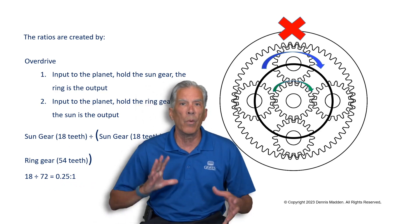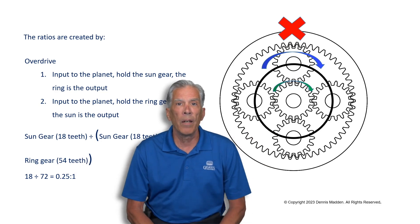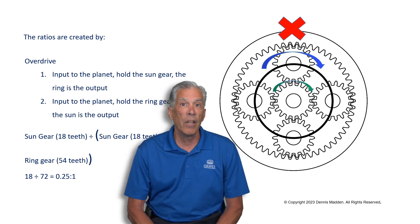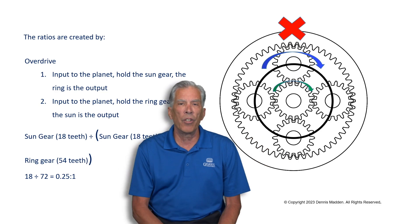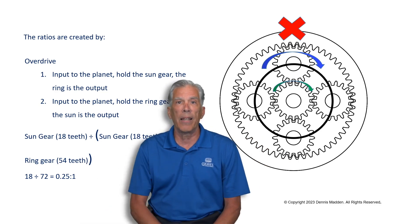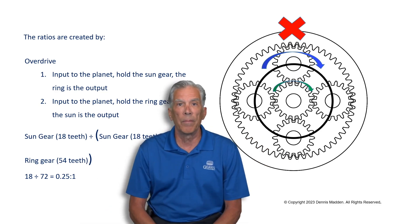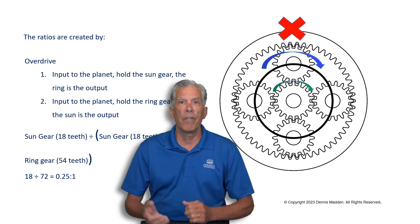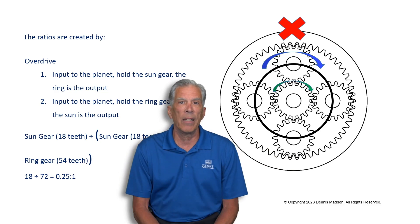When you combine several of these planetaries together, you may wind up with a situation where you're overdriving another planet that is in reduction mode. It's the combination of these planets that allows us to achieve nowadays up to 10 different gears.